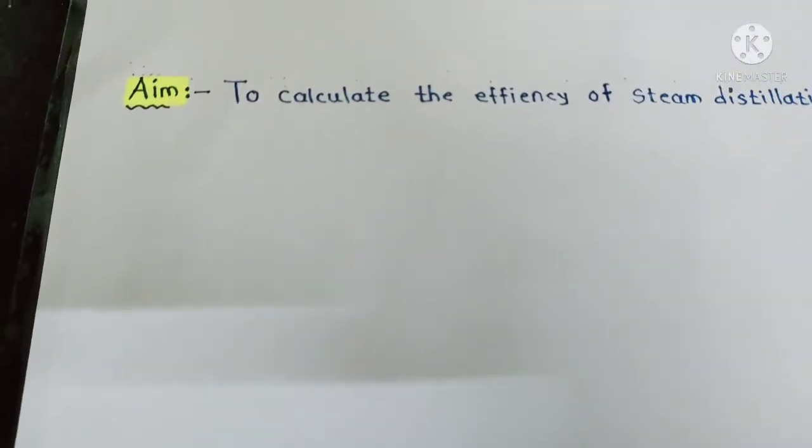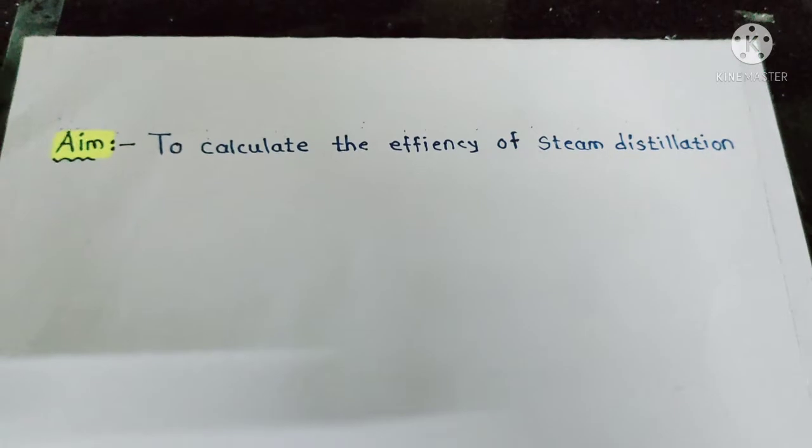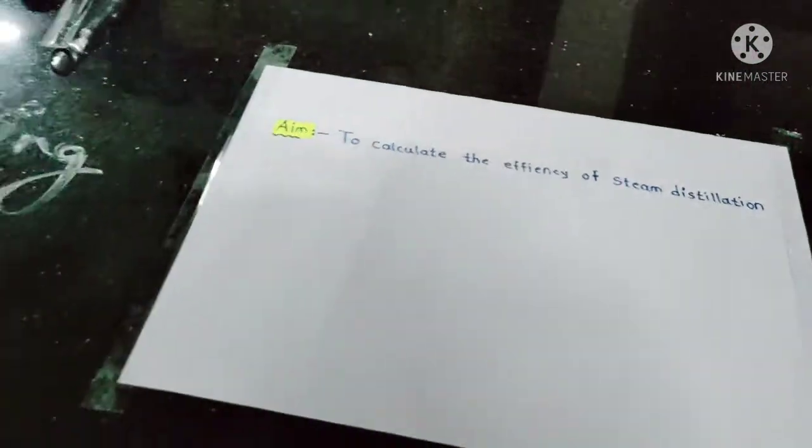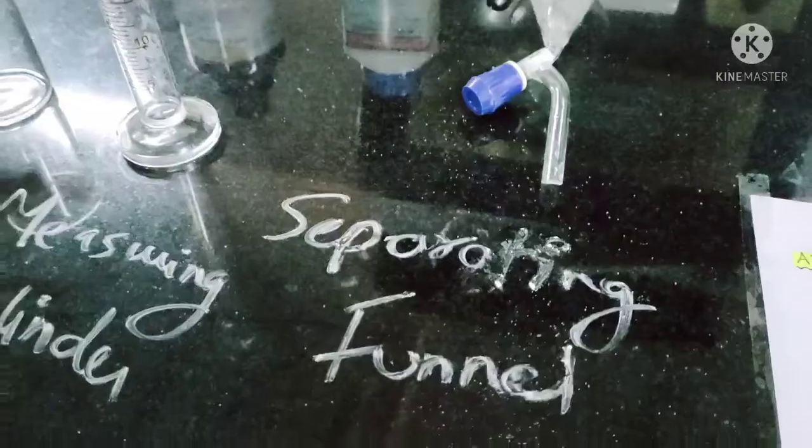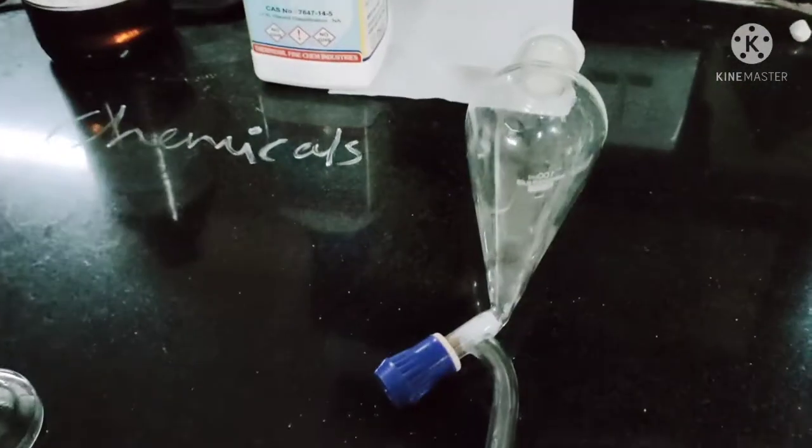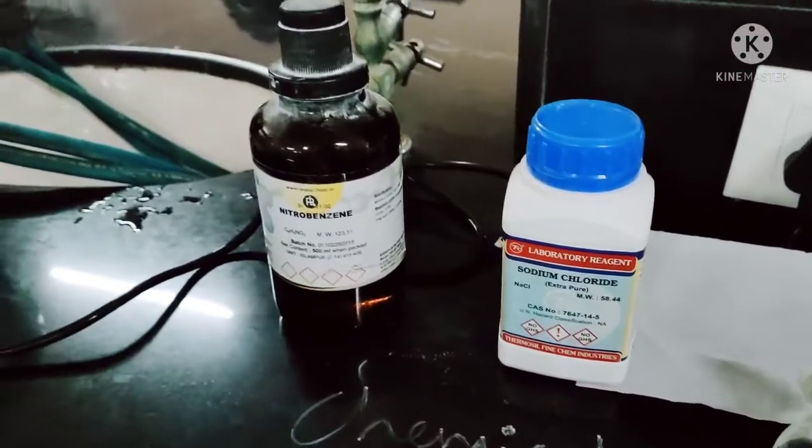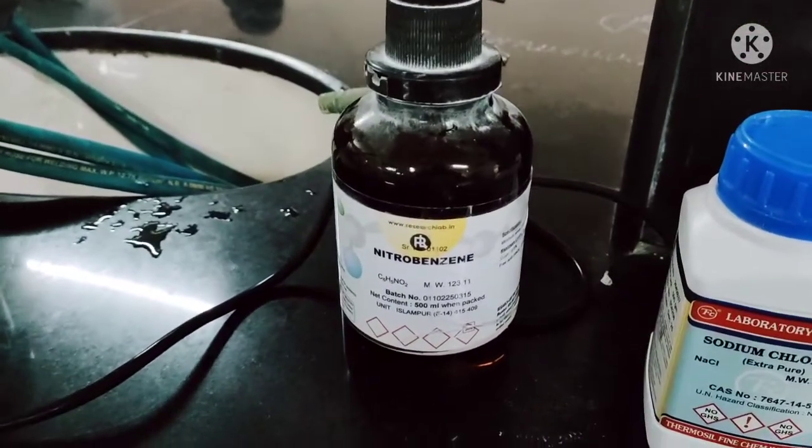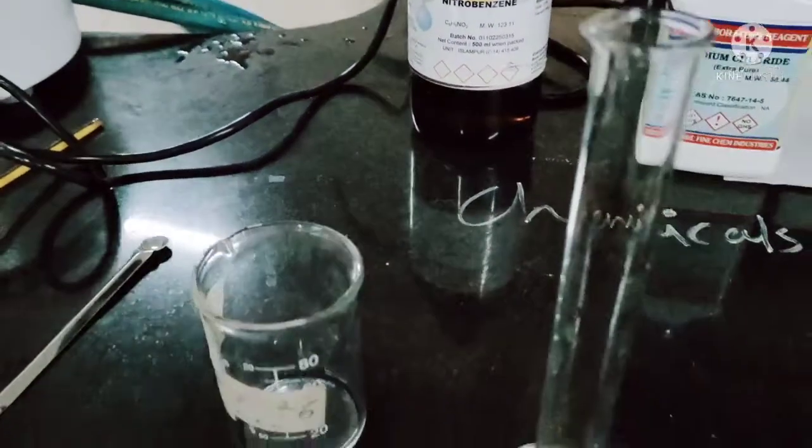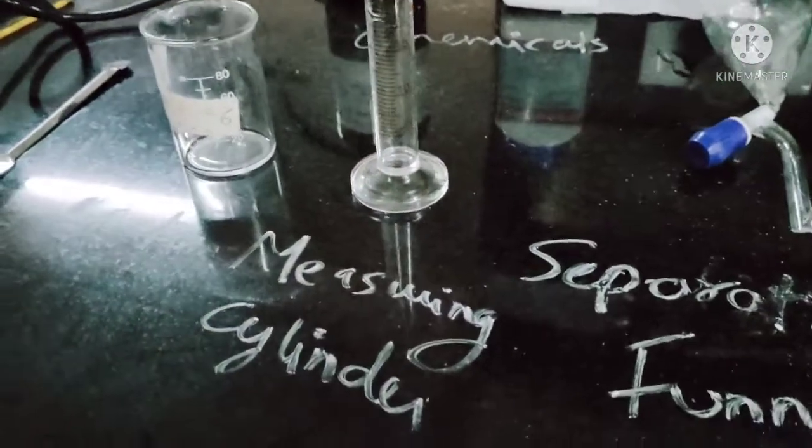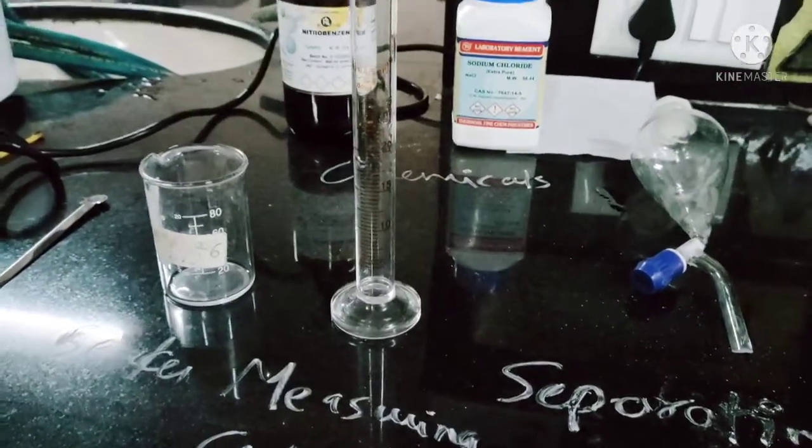The next practical is to calculate the efficiency of steam distillation. For this we require separate funnel, chemical is sodium chloride, nitro benzene, measuring cylinder, beaker.